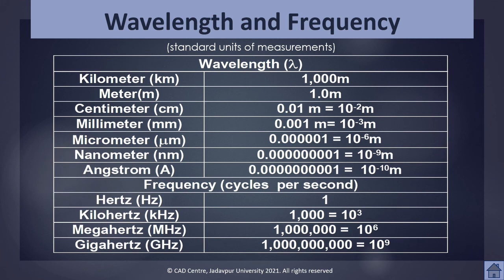There are different units to measure wavelength — for example, kilometer, meter, centimeter, millimeter, micrometer, nanometer, angstrom, etc. For measuring frequency (cycles per second), we have units like Hertz, kilohertz, megahertz, gigahertz, etc. One Hertz means one cycle per second; one kilohertz means 1,000 cycles per second.